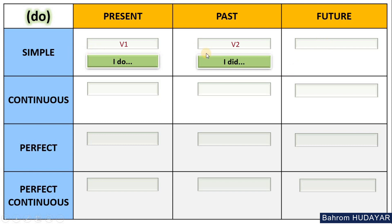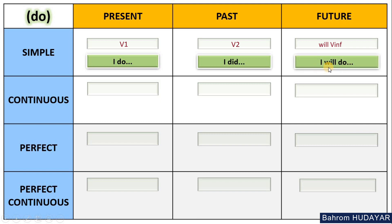Let's move on to Future Simple. Your sentence is here and you want its English equivalent. All you have to do is remember the formula for future: 'will + verb infinitive.' The result will be 'will do', and the full sentence will be 'I will do something.'